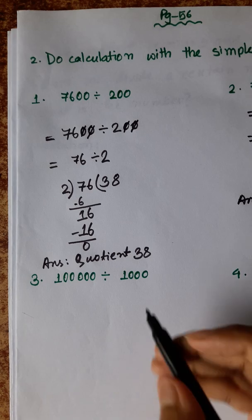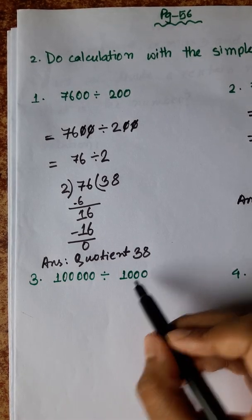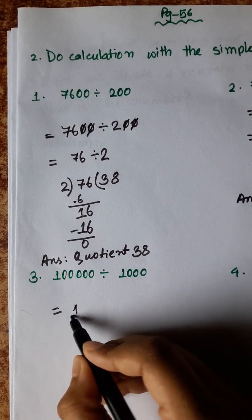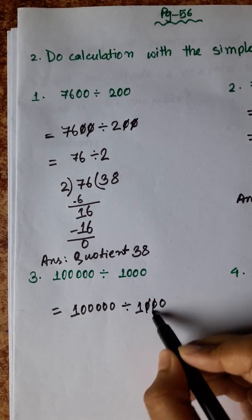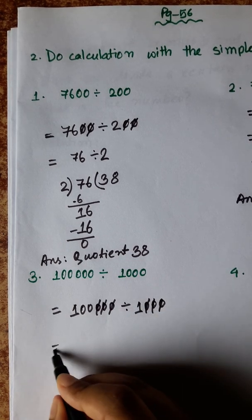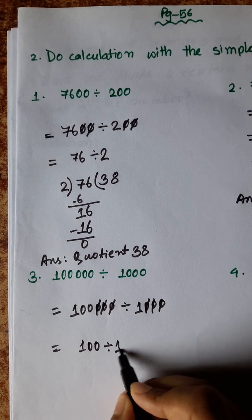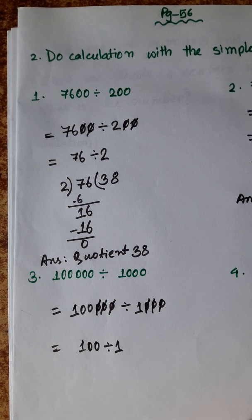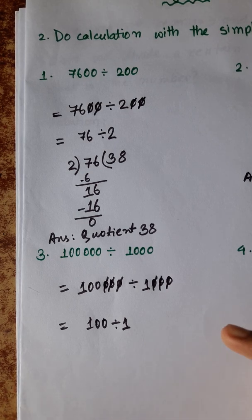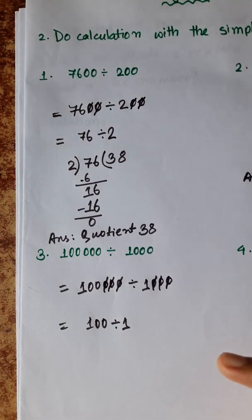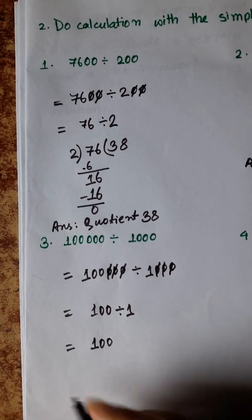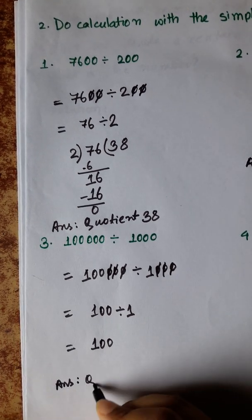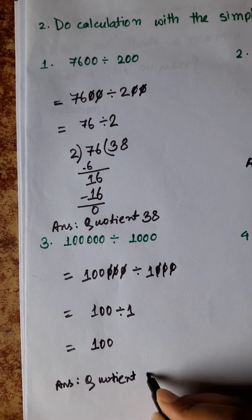Next, this has 3 zeros and this has 5 zeros. So we can cut 3 zeros from these 5 zeros. Left over is 100 divided by 1. We know division by multiplication is 1. So the answer is 100.